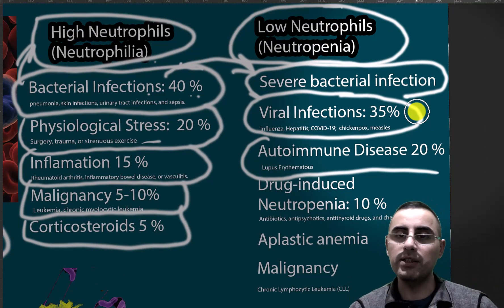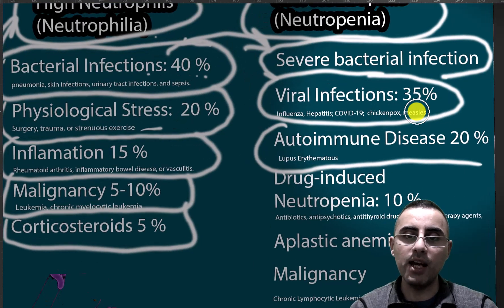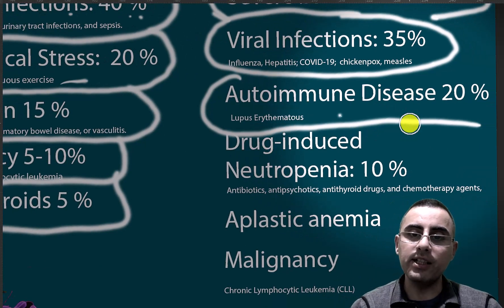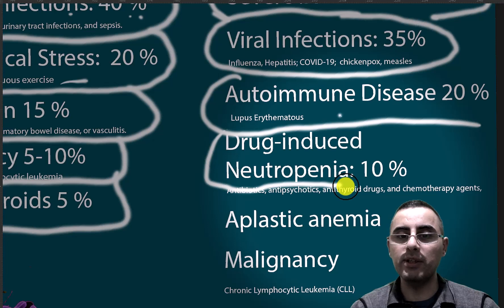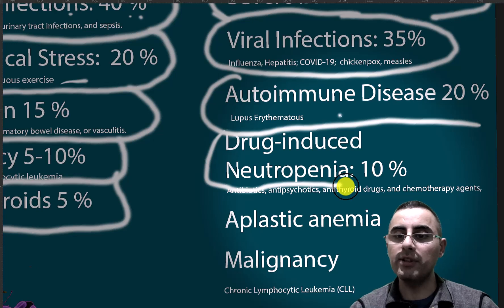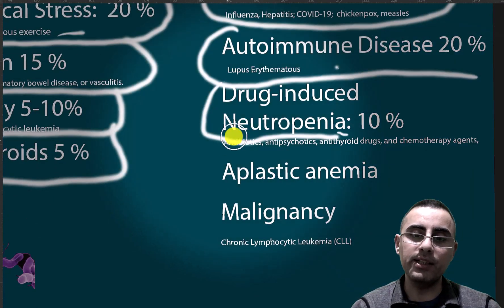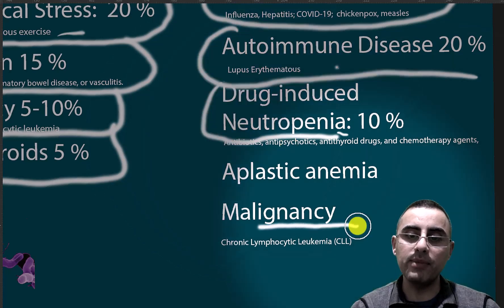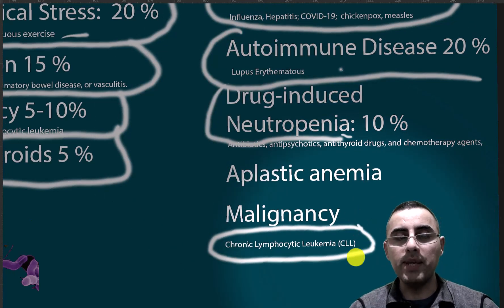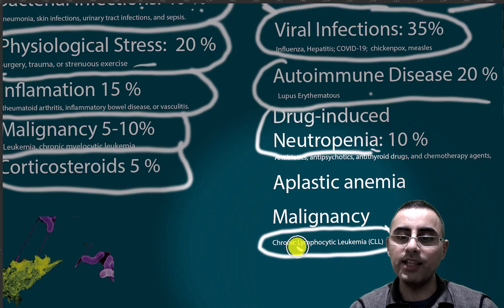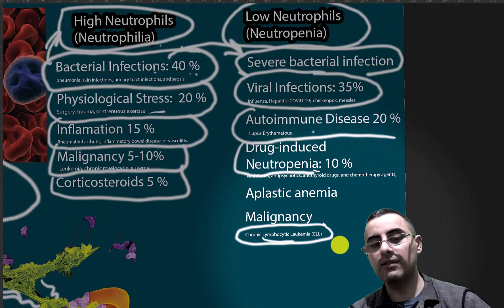Some diseases can cause either high or low neutrophils depending on the case — for example, rheumatoid arthritis can sometimes cause low neutrophils. Drug-induced neutropenia is also very common, as many drugs such as antibiotics, antipsychotics, antithyroid drugs, and chemotherapy agents can suppress neutrophil production. Aplastic anemia and chronic lymphocytic leukemia can also cause low neutrophils — notably, myelogenous leukemia causes high neutrophils while lymphocytic leukemia causes low neutrophils.